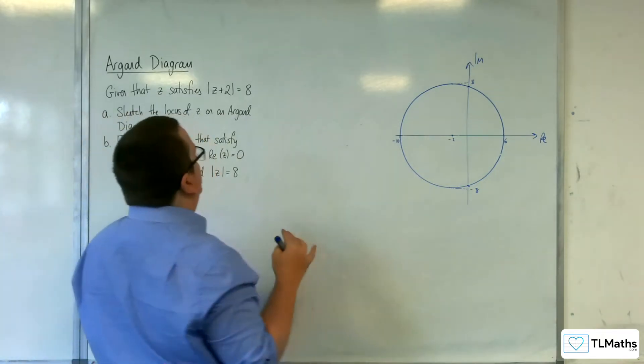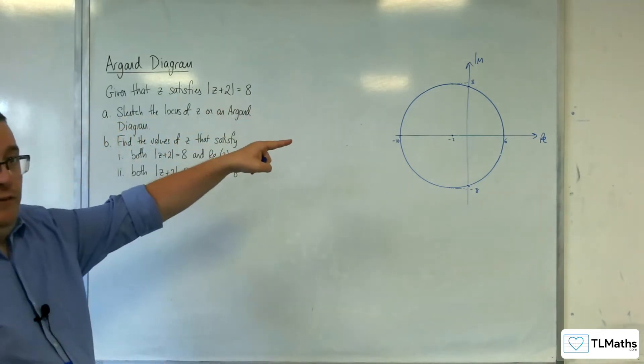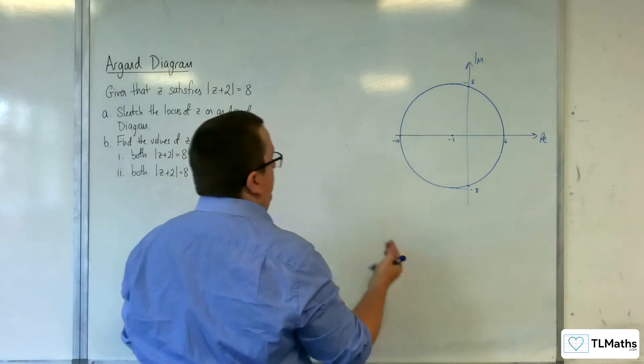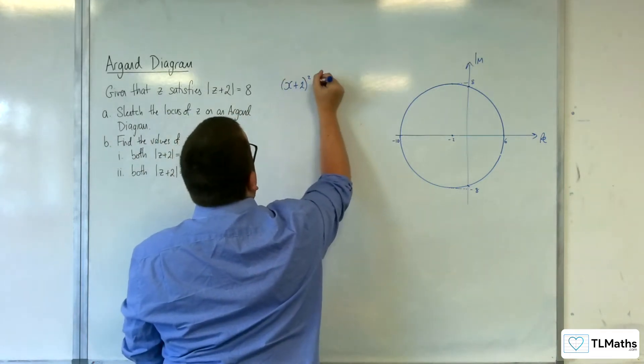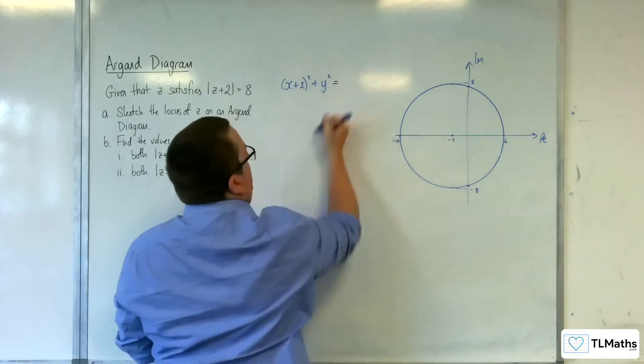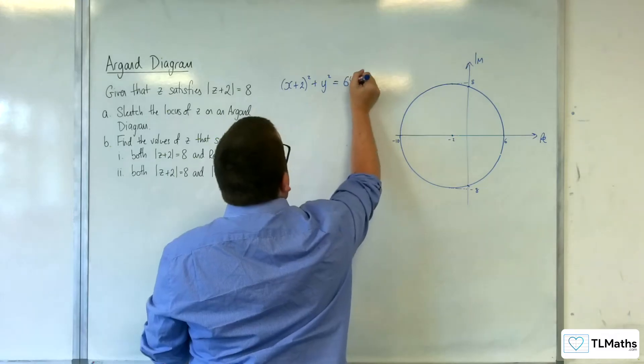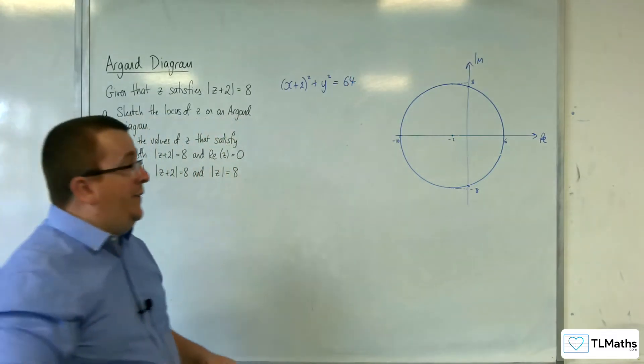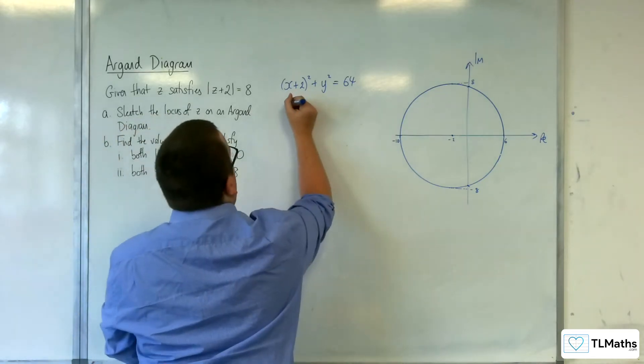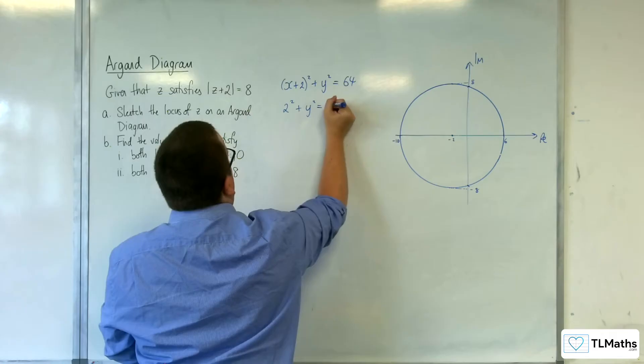So, if I'm going to do that then, I need to think about what the equation of that circle is. So, in Cartesian form, it would be x plus 2 squared plus y squared is equal to r squared. So, 64. Now, if the real part of z is 0, that means that x is 0. So, we're looking at 2 squared plus y squared equals 64.